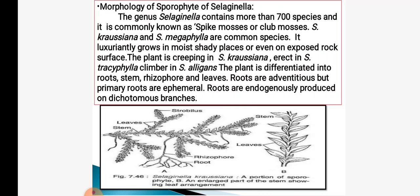Selaginella contains more than 700 species. It is commonly called spike moss or club moss. Selaginella kraussiana and Selaginella megaphylla are common species. It grows vigorously in moist shady places or on rock surfaces. It may be creeping in Selaginella kraussiana, erect in Selaginella trachyphylla, or climbing in Selaginella elegans. The plant is differentiated into roots, stem, rhizophore and leaves, which are arranged in rows.